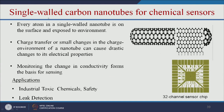Let us see how single-walled carbon nanotubes can be used for chemical sensing. Every atom in a single-walled nanotube is on the surface and exposed to the environment. Charge transfer or small changes in the charge environment of a nanotube cause drastic changes to its electrical properties. Based on that, we can make chemical sensors useful for leak detection and other applications.